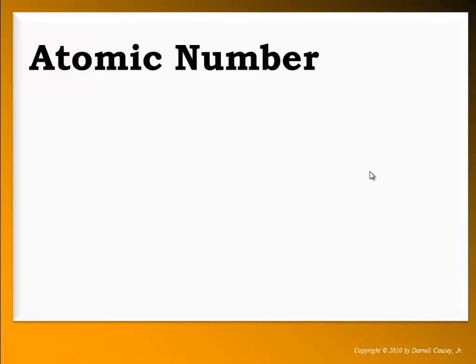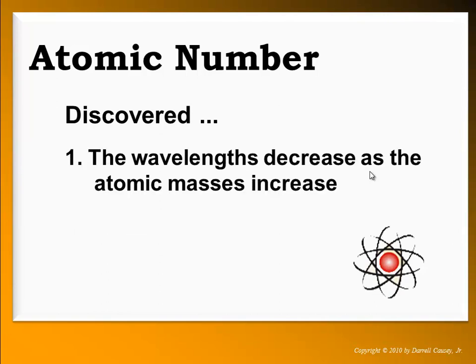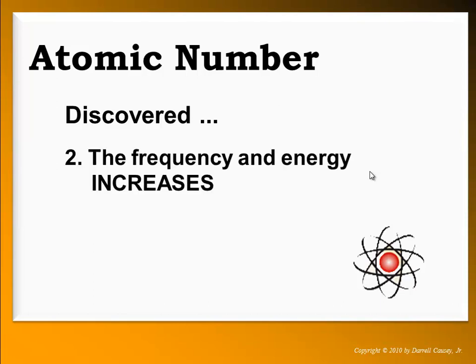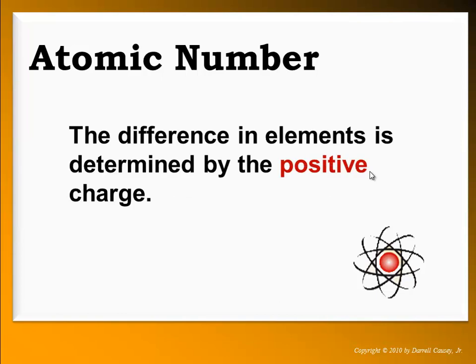The atomic number was discovered by Henry Moseley, who studied the x-rays of several elements. He noticed a constant value across comparisons of all these elements. He discovered that wavelengths decrease as atomic masses increase, and that frequency and energy both increase — which makes sense since they are directly related. He also found the increase was constant from one element to the next, and determined that the difference between elements is determined by the positive charge.